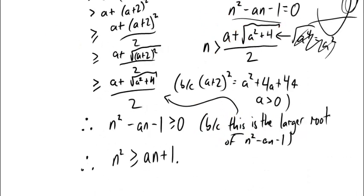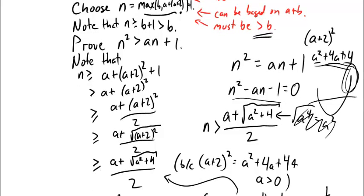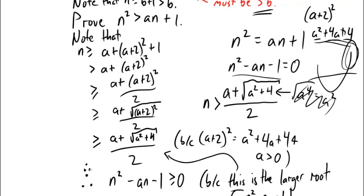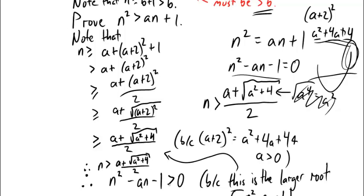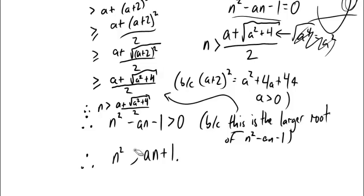Wait — I wanted strict greater than, not greater than or equal to. Did I get it? Yes. I took a strict greater than step earlier, so I note: n is strictly greater than a plus the square root of a squared plus 4, all over 2. Therefore n squared minus a·n minus 1 is strictly greater than 0 — n is greater than the larger of the two roots — and so n squared is strictly greater than a·n plus 1. That is the conclusion I was going for.